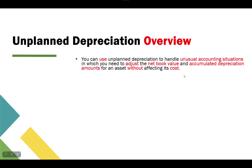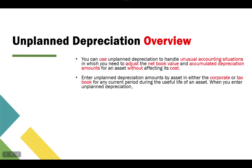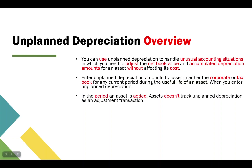Unplanned depreciation can be used to handle unusual accounting situations in which you need to adjust the net book value and accumulated depreciation amount for an asset without affecting its cost. You can enter unplanned depreciation by asset in either a corporate asset book or tax book for any current period during the useful life of the asset. Assets does not track unplanned depreciation as an adjustment to transactions.